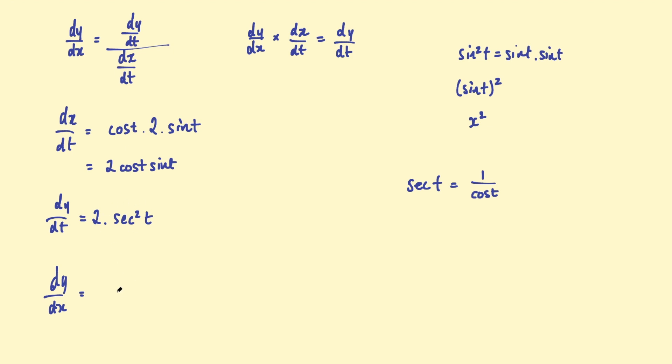But actually I might leave it like that. So sec squared t, and then this is divided by dx/dt. So this is divided by two cosine t.